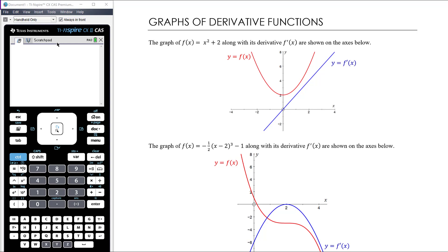In this section we want to start looking at the graph of the derivative function and draw graphical connections between the graph of the original function and the graph of the derivative function. Here on the first set of axes I've got the graph of f(x) = x² + 2, a parabola translated up by 2, and then the graph of its derivative. Even if I don't give you the equation of f(x), you should still be able to draw a rough sketch of what the derivative graph looks like.